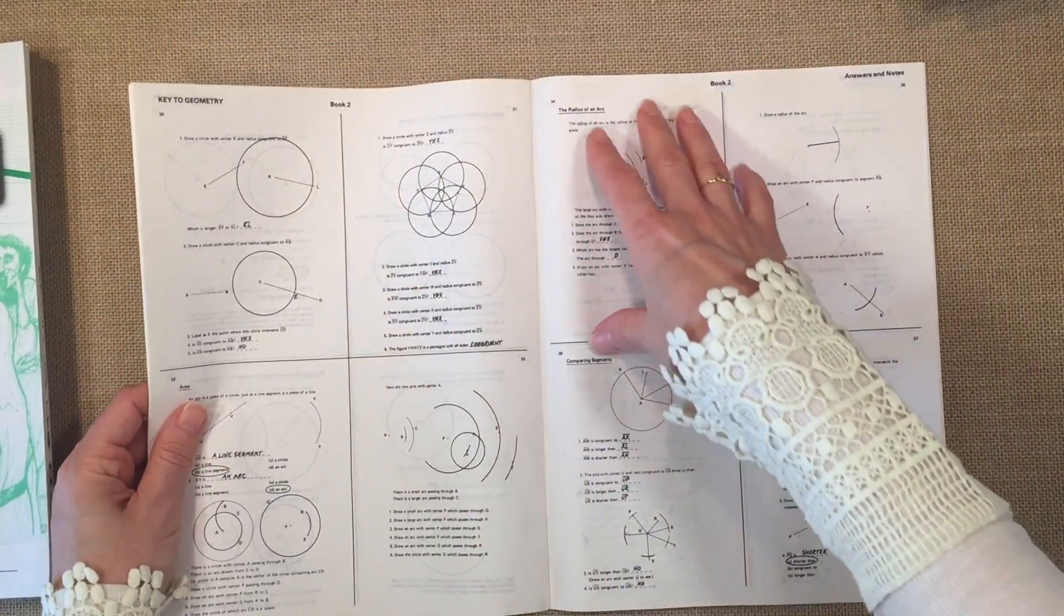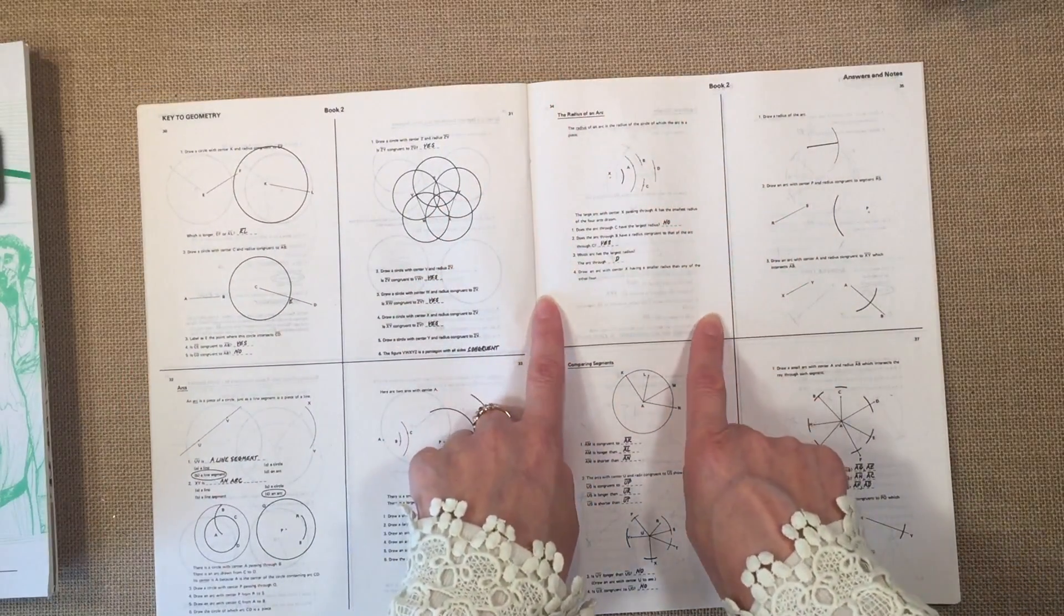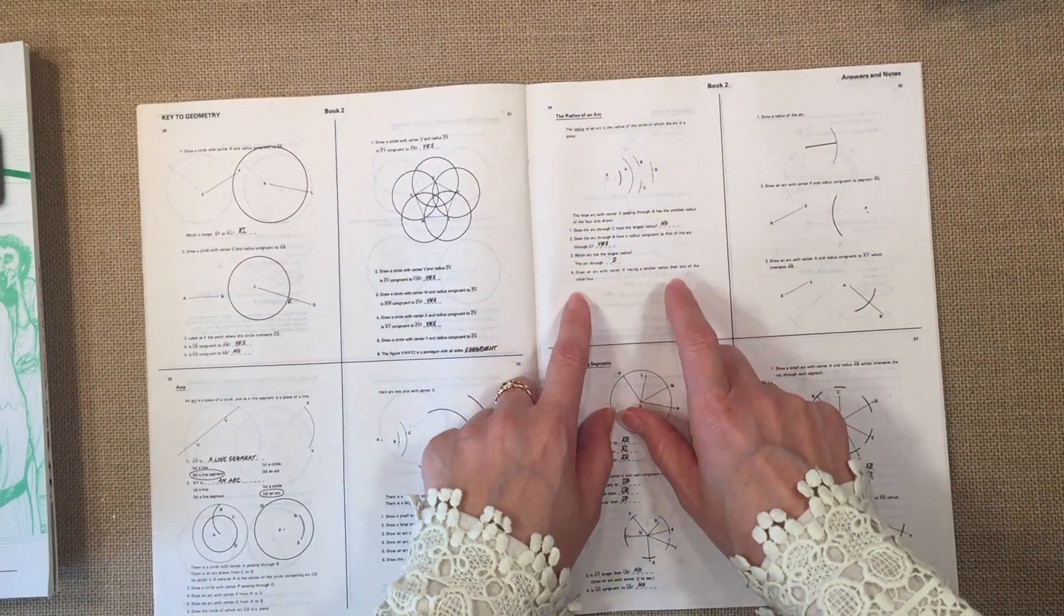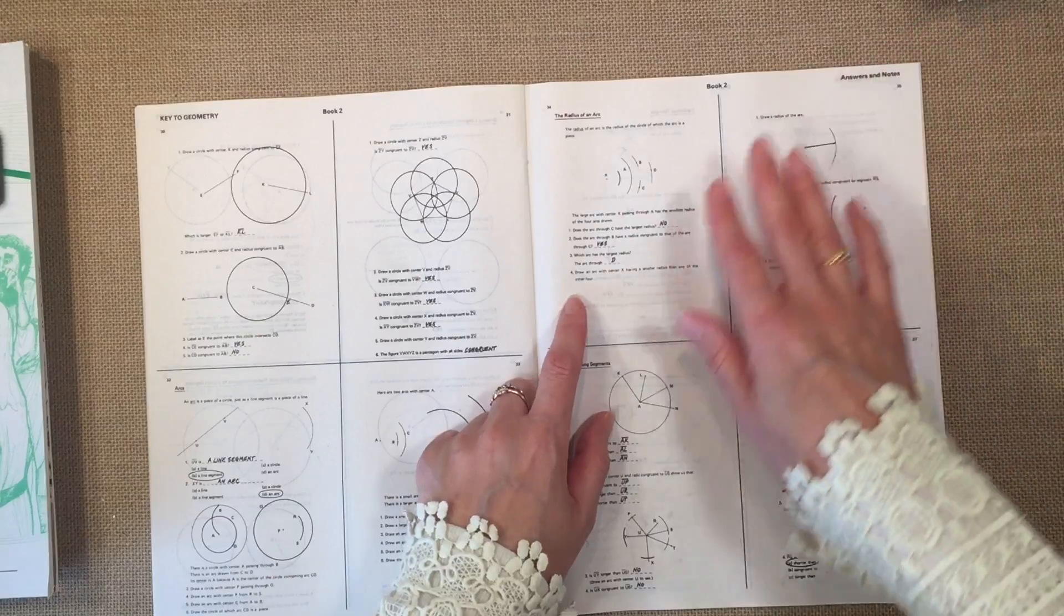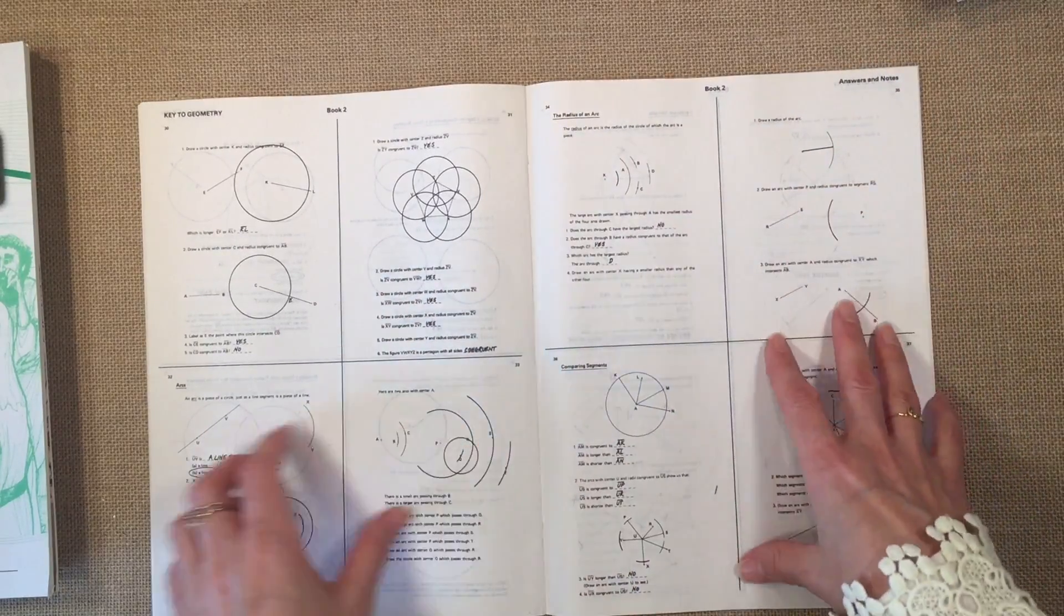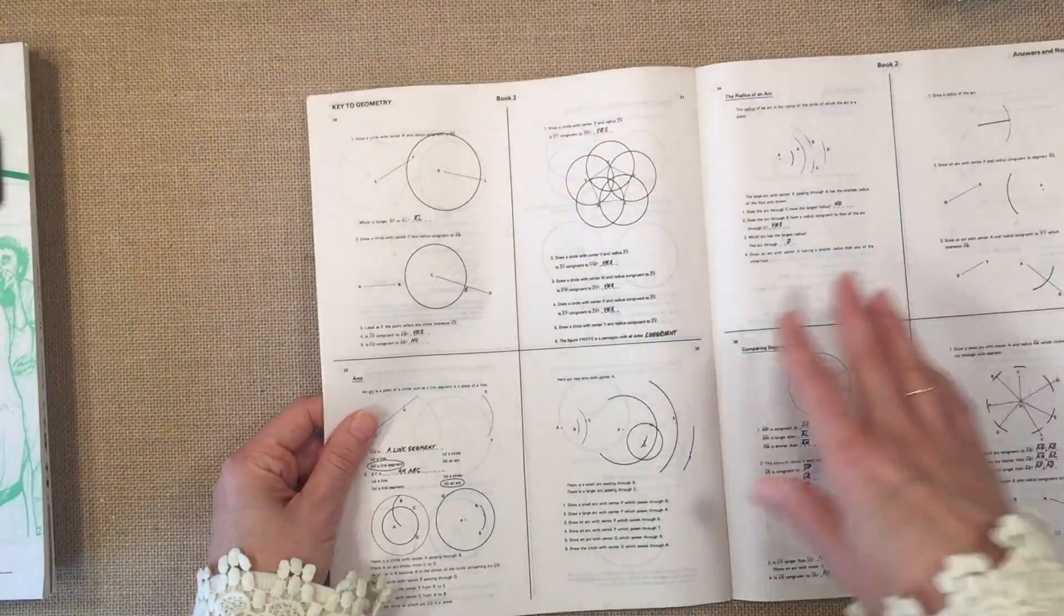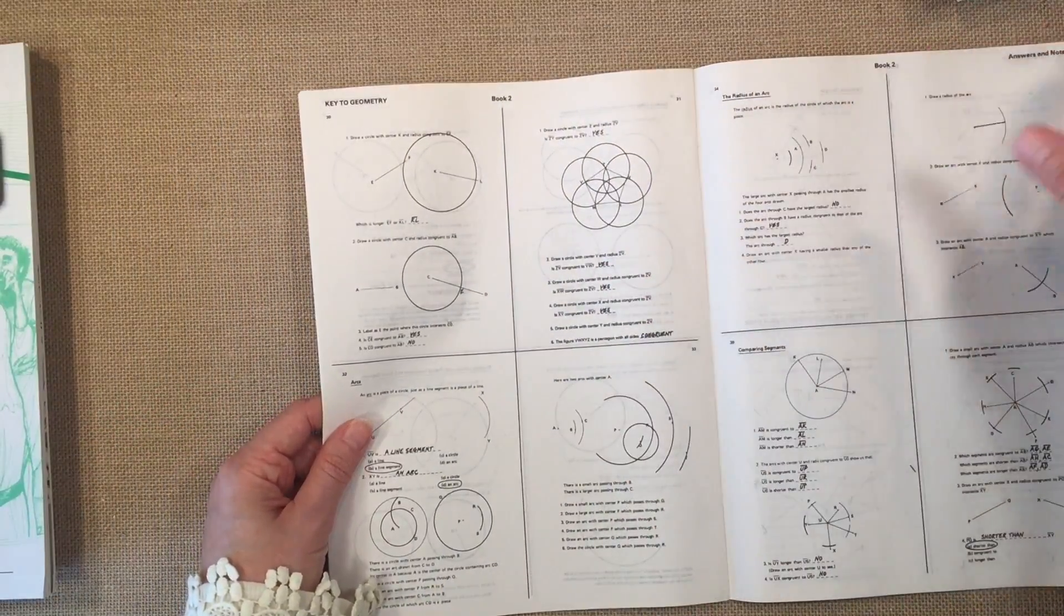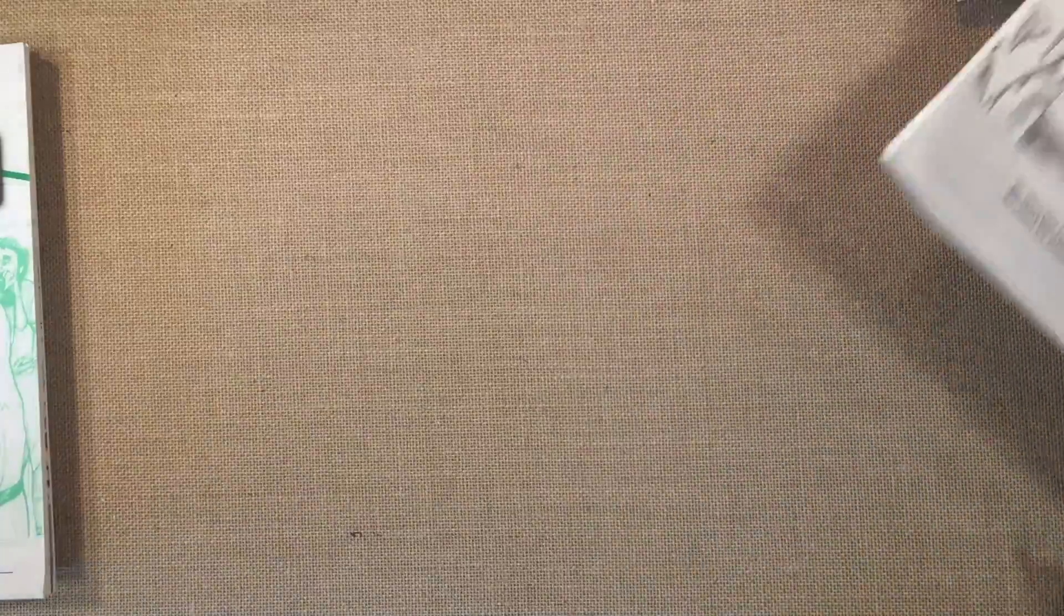And for the answers, they are the exact same workbook page that you would find in the workbook, but it's been shrunk down to quarter size. So you get four pages on one sheet, which is really great because you're not just getting the answers by themselves. Even in all the other ones, it's nice to see the questions along with the answers.